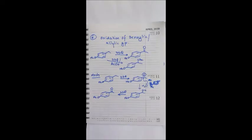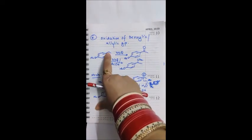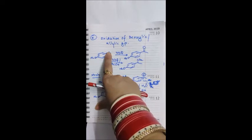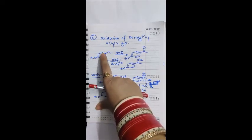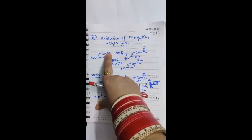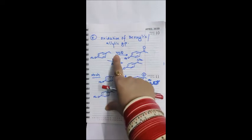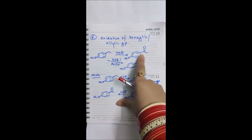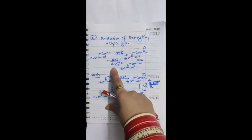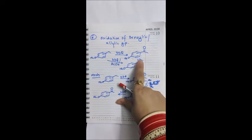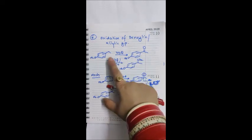The last application of DDQ is oxidation of benzylic or allylic groups. A benzylic group is attached to a benzene ring; an allylic group is adjacent to a double bond. DDQ oxidizes these groups to a C=O (ketone). If acetic acid is also used with DDQ, an OAc ether is formed instead of a ketone.